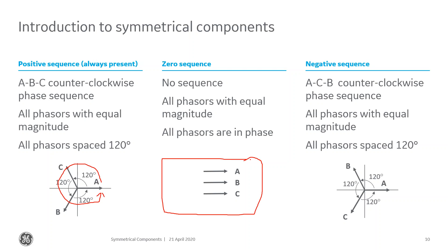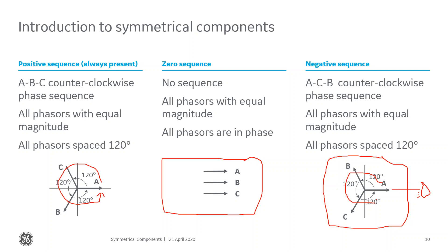The zero sequence network: all phases are equal magnitude and all phases are in phase with each other — there's no sequence to it. The negative sequence network has a reverse phase rotation. If this thing is rotating counterclockwise, I expect the sequence of phases passing my eyeball to be ACB. But again, all phases are equal and equally spaced by 120 degrees.